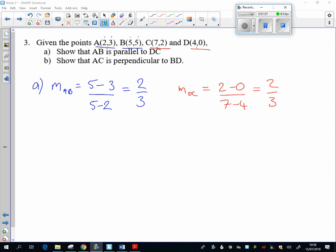At that point I obviously know that they're parallel, but to answer that question I must clearly state why. So AB and DC have the same gradient, therefore they are parallel.